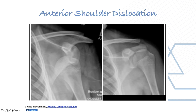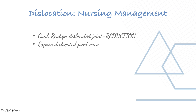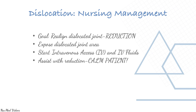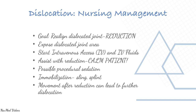Management of an anterior shoulder dislocation: realign the dislocated joint, expose the area, start IV access and give IV fluids, assist with reduction, consider possible procedural sedation, and immobilize after reduction — movement after reduction can lead to further dislocation. Provide patient education.